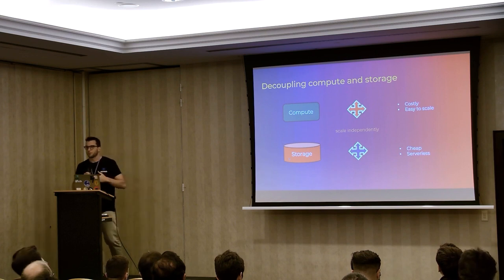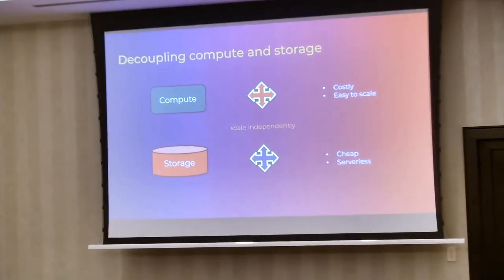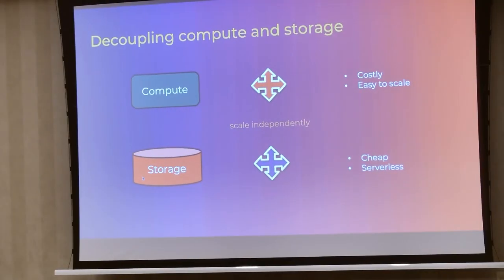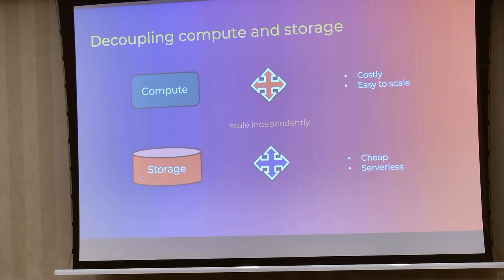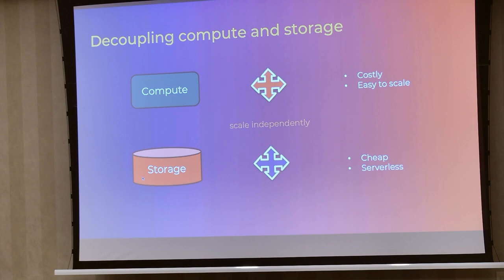Most current data infrastructure decouples storage and compute. So if storage grows, we are not paying more for computation — they're separated. This brings benefits: from the consumer side, you can use different query engines — Spark, Hadoop, Presto, Hive, Trino, Dremio, or Snowflake. You can use cloud object storage like S3 or Google Cloud Storage, or deploy your own on-premises storage like MinIO or Ozone.